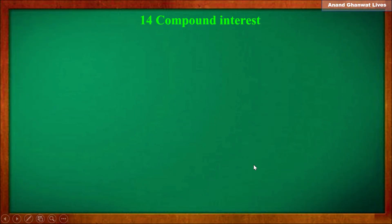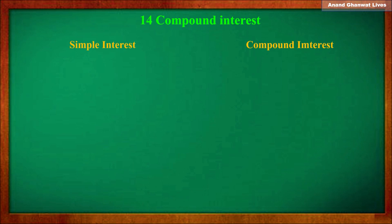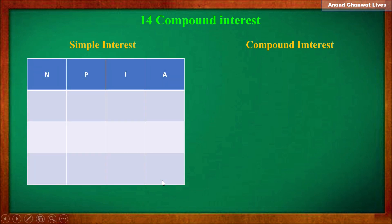Namaste, students of 8th standard. In this lecture we are going to learn compound interest. First, let us learn the difference between simple interest and compound interest. For that, let us make a chart where n means number of years, p means principal, i means simple interest, and a is the amount.